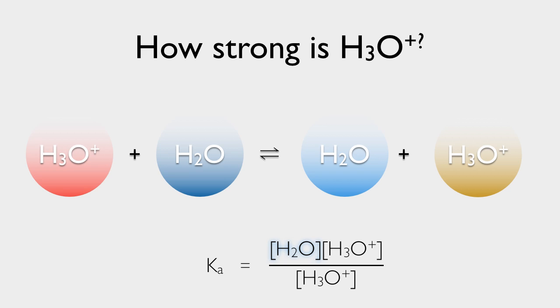Of course, the hydronium still cancels out, and this leaves us with a Ka equal to the concentration of water, which is about 55 moles per liter. If we take the negative log of that, we get the pKa value, which is -1.74.